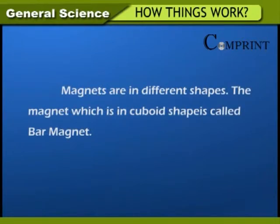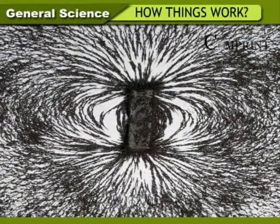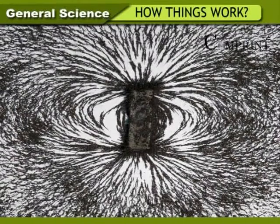Magnets are in different shapes. The magnet which is cuboid in shape is called a bar magnet. Take some iron filings and a bar magnet. Roll the bar magnet in the iron filings and observe. Place the magnet with iron filings on a paper and observe. It is seen that a lot of iron filings are attracted at the edges and fewer in the middle. So magnetism is more at the edges of a magnet.